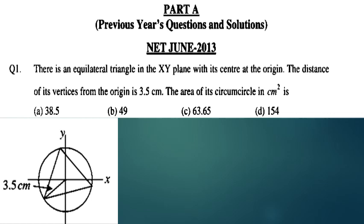There is an equilateral triangle in the xy plane with its center at the origin. The distance of its vertices from the origin is 3.5 cm. We need to find the area of its circumcircle.